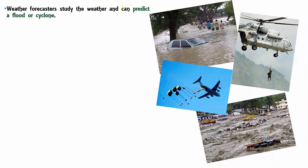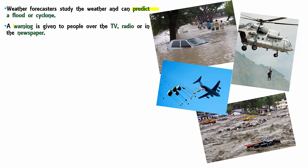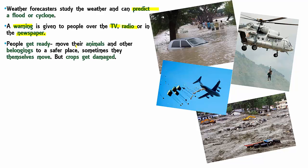Weather forecasters can often predict a flood or a cyclone because they are monitoring the earth from above through satellites and they know the kinds of movements of air and water happening around us. When they see that a cyclone is approaching, a warning is given to people on TV, radio, or through newspapers. People prepare by moving their animals and belongings to a safer place. Sometimes, if it's a major warning, they themselves move to places where the cyclone is less likely to hit. But unlike humans and animals, crops cannot move and they get damaged.